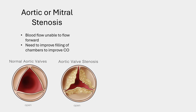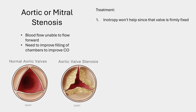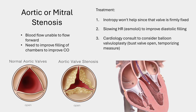Here's a single slide on aortic or mitral stenosis. Stenosis kills you slowly or causes problems with another illness such as sepsis. The concept is blood flow is unable to move forward due to a fixed obstruction, so you need to improve filling of the chambers to improve cardiac output. Inotropy does not help since the valve is firmly fixed and the heart is not seeing normal afterload — only the fixed obstruction. Slowing the heart rate to improve diastolic filling is very helpful. Cardiology consultation can be considered for balloon valvuloplasty, which can bust the valve open as a temporizing measure.